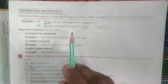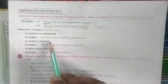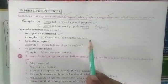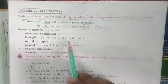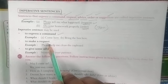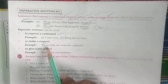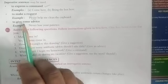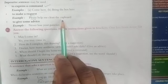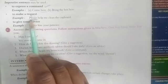Now some key features of imperative sentences. Number one: to express a command — like 'Come here,' 'Bring the box here.' These types of sentences are in the category of command. Next category: to make a request. For a request, we use the word 'please.' For example, 'Please help me clean the cupboard' — this is a request sentence, identified by the word 'please,' and it ends with a full stop.